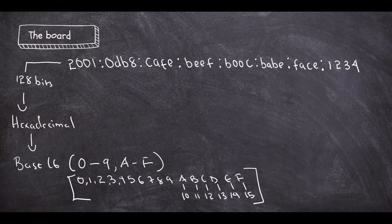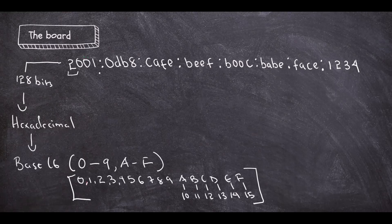An IPv6 address is 128 bits, hexadecimal and base 16. Each of the positions in the address is 4 bits — for example the 2, 0, 0, and 1. So each group separated by the colon is 16 bits, because 4 times 4 equals 16. And 16 times 8 groups gives us the 128 bits.